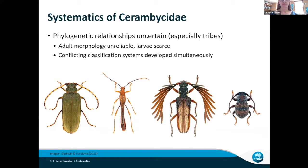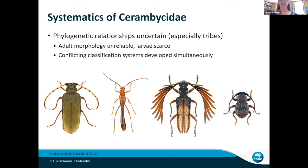The main reason is that adult morphology is unreliable for establishing deep relationships. You can see quite a variety of body shapes, and the larvae, which are better at giving you an idea of relationships, are not available for every group. So based on this difficult morphological data set, we have conflicting classification systems that emerged in the 19th century when people were describing longhorns independently.